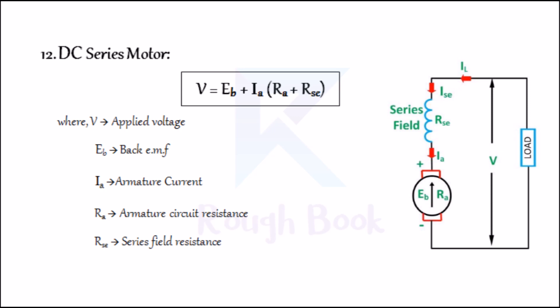Number twelve: DC series motor. In a series wound motor, the field winding is connected in series with the armature as shown in the figure. The voltage equation is given by V = EB + IA(RA + RSE), where V is the applied voltage, EB is the back EMF, RA is the armature resistance, and RSE is the series field resistance.